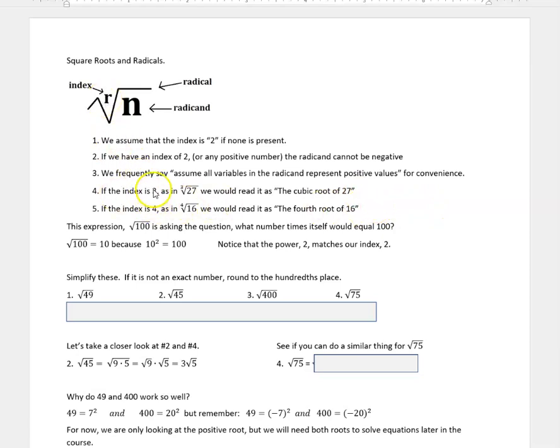If the index here was 3, such as this, where we actually saw an index, we can't assume it's 2 because we see it's 3. This is read as the cubic root of 27. And if it was 4, that would be read as the 4th root of 16. You can put any number you want in the index, but for our purposes, we're just talking about a 2, so we don't show it at all.